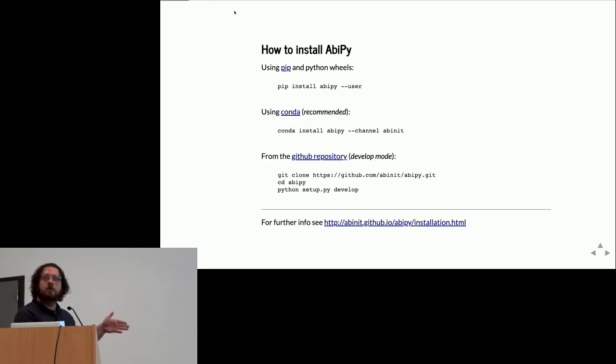The difference is that pip is mainly designed for pure Python packages, while Conda is also able to install C, Fortran, and C++ applications. Last but not least, if you want, you can download the repository and install from source.